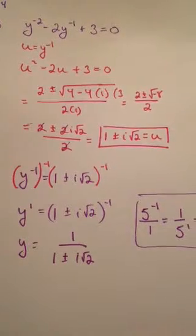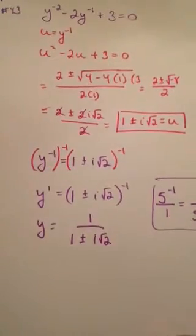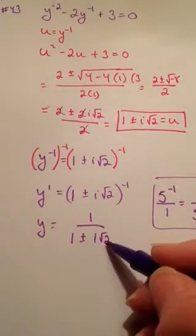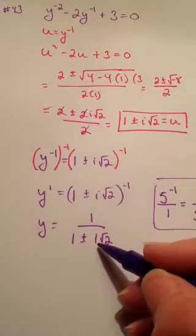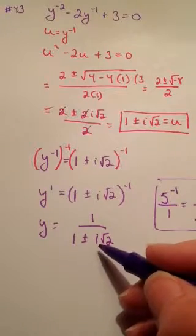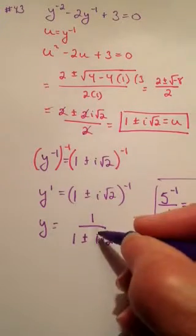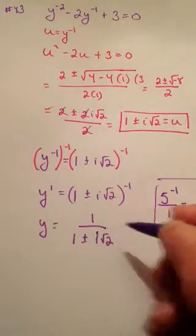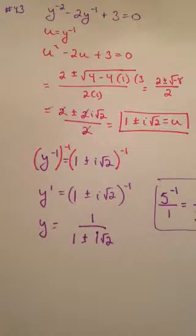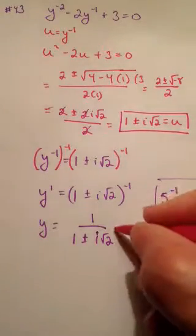So y is going to equal 1 over 1 plus or minus i root 2. We know that we can't leave this with imaginary numbers in the denominator — we've got a double whammy there. So we have to multiply by the conjugate.